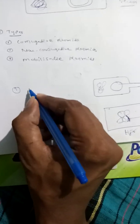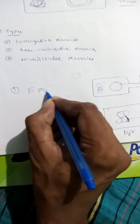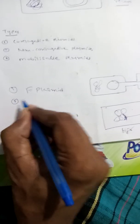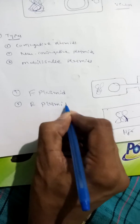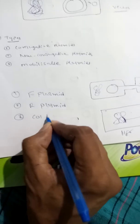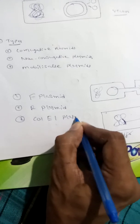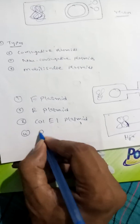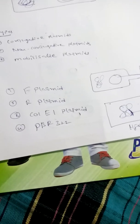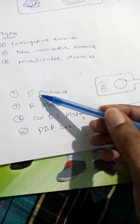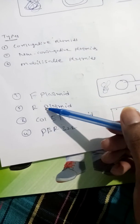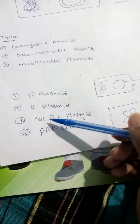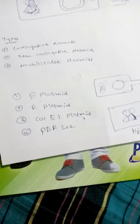Examples of plasmids include: F plasmid (fertility factor plasmid), R plasmid (antibiotic resistance plasmid), Col E1 plasmid, and pBR322. These act as vectors in recombinant DNA technology.